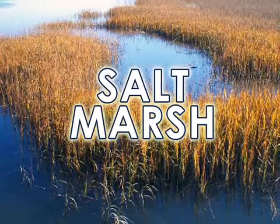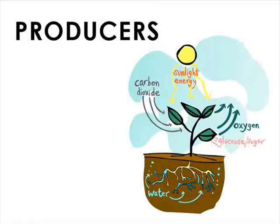Let's go over the ecosystem of a salt marsh. In any ecosystem, there are producers. Producers are organisms, such as plants, that are able to produce their own food, usually through photosynthesis. In this case, we have salt marsh grass.